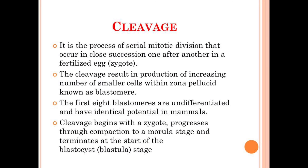First of all, what is cleavage? Basically, it is the process of serial mitotic division that occurs in close succession, one after another, in a fertilized egg — ultimately the zygote. Simply, it is the process of division of a zygote by means of mitosis that increases the cell number, and this whole process is known as cleavage.